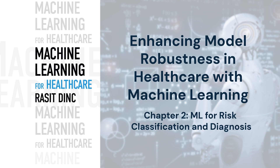One effective approach to improving model robustness is through enhancing data diversity and quality. Data augmentation involves transforming and modifying existing data to expand the training dataset, allowing the model to adapt to different scenarios more effectively. Additionally, effective sampling can correct imbalances within the dataset by focusing more on minority classes and less on over-represented ones, ensuring a more representative training experience.